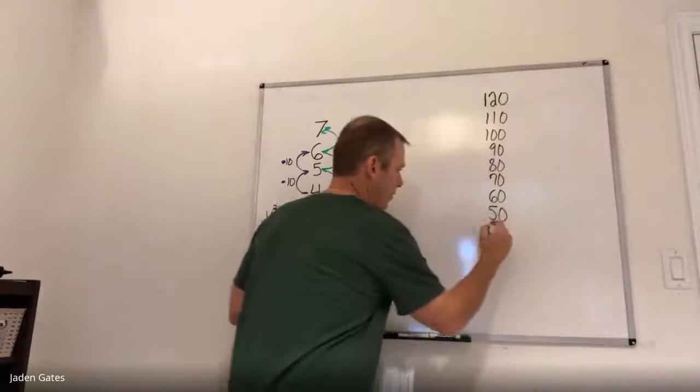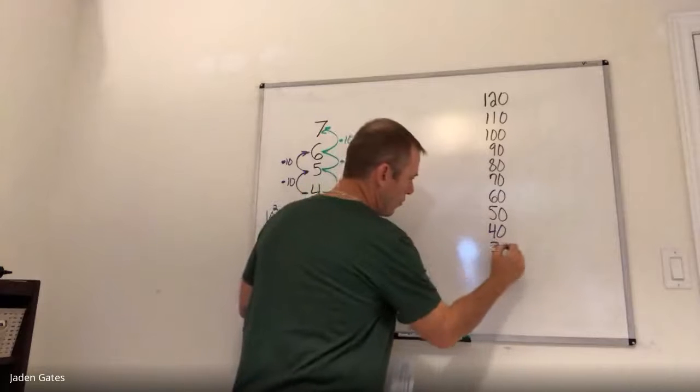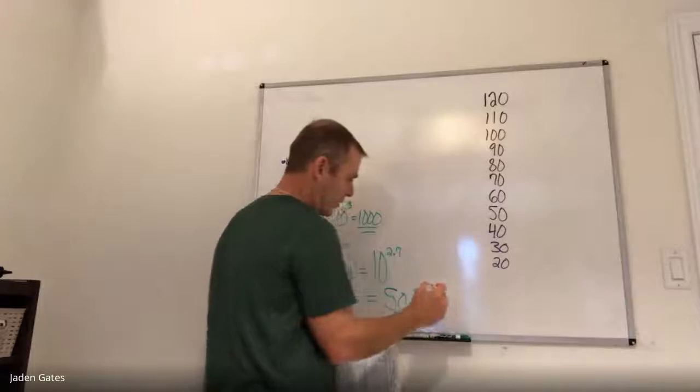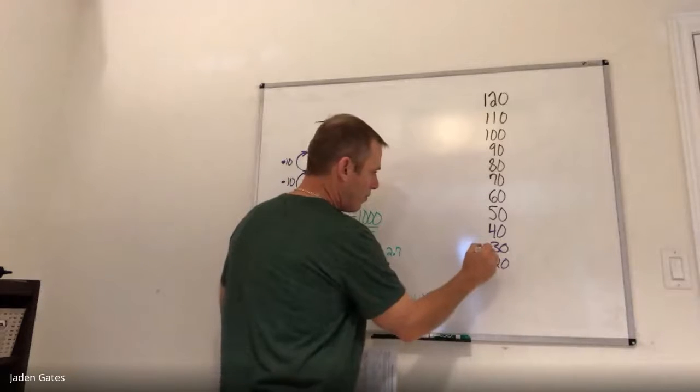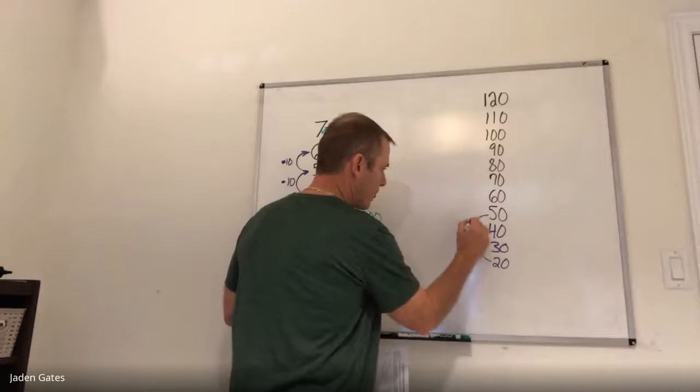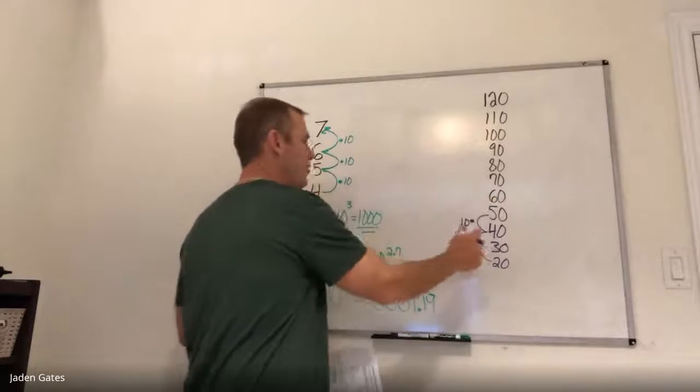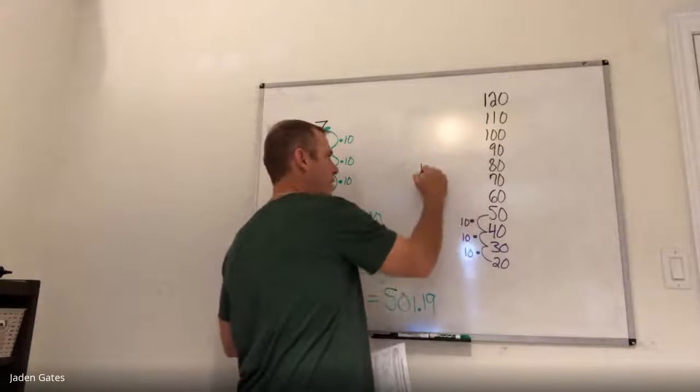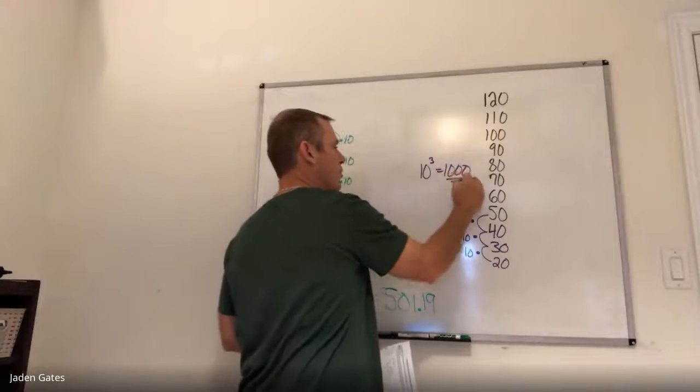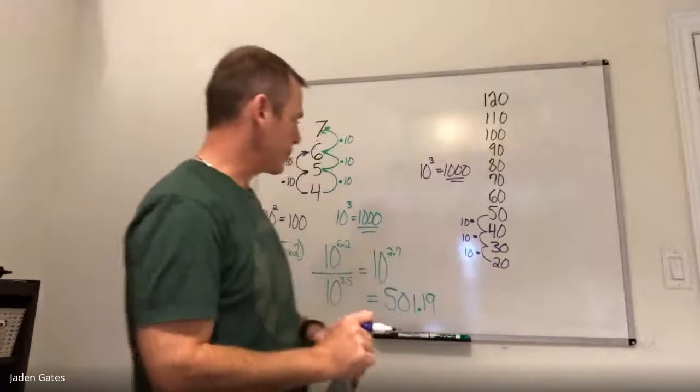So I got to fill in here. I want to compare a 50 to a 20. I got to go by 10. So 40, 30, 20. And so again, I count the steps. Up one, up two, up three. And each time that I'm going up three, it's by a multiple of 10. And so if I compare a 50 to a 20, again, 10 to the power of three, which is a thousand. So a 50 decibel sound is a thousand times louder than a 20 decibel sound.